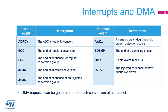Each ADC can generate nine different interrupts: ADC ready, end of conversion, end of sequence, end of injected conversion, end of injected sequence, analog watchdog, end of sampling, data overrun, and the overflow of the injected sequence context queue.